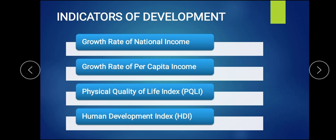When depreciation is not deducted from national income, gross national income is taken and divided by the total population of a country to find per capita income. If the population is less and the national income growth rate is more, the per capita income grows. These are the key concepts we will study in this topic.